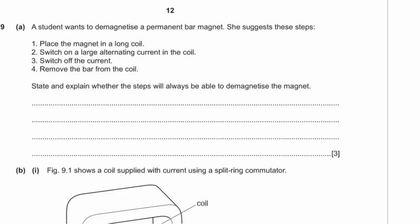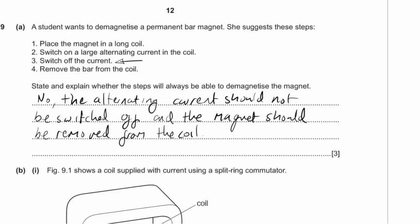Question 9. A student wants to demagnetize a permanent bar magnet using three steps: place magnet in a coil, switch on a large alternating current, switch off the current, then remove the bar from the coil. State and explain whether these steps will demagnetize the magnet. They won't — to demagnetize a magnet, you must slowly withdraw it from the coil with the alternating current still on. Switching the current off first and then removing it won't work.